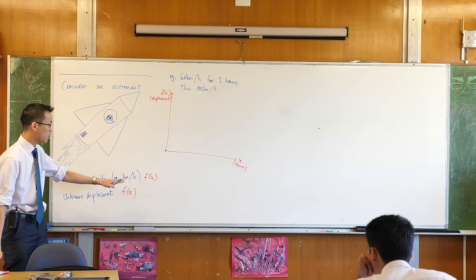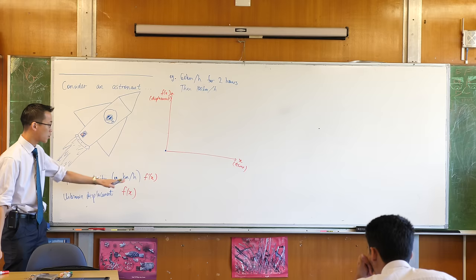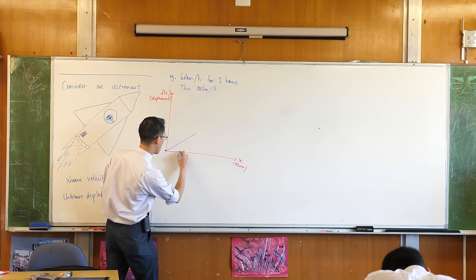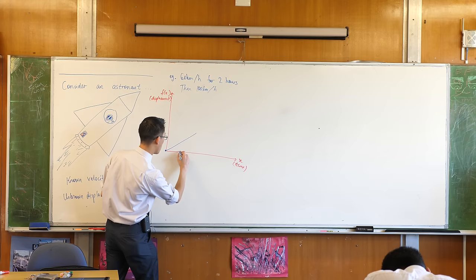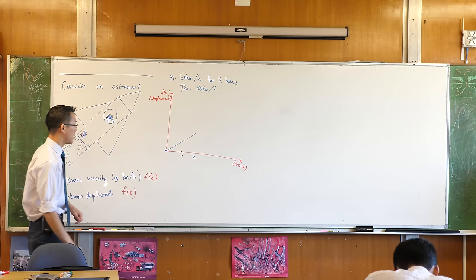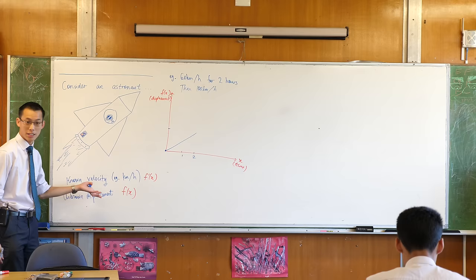And the speed isn't changing, but the speed is kind of like, well, if it's the derivative, it's the gradient, isn't it? So the gradient isn't changing, it just stays at 60. So let me draw something that looks like that. Stays at 60. This is for one hour, two hours. We can put some information on here.